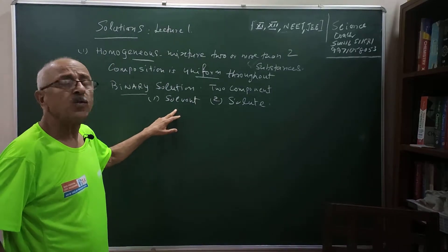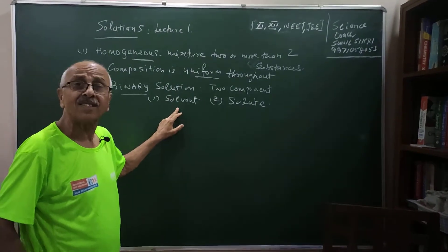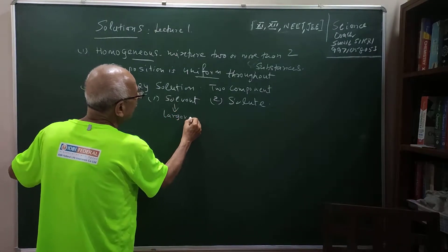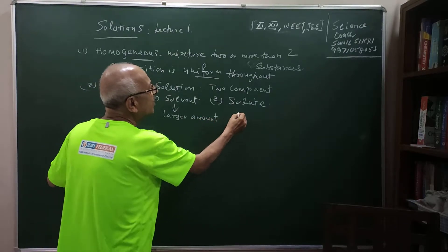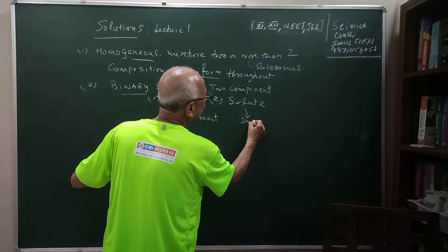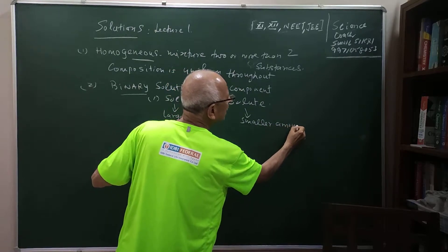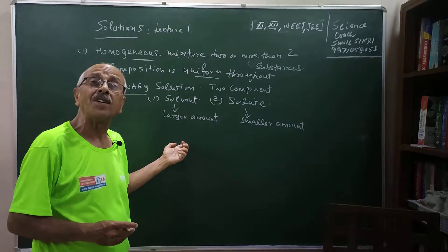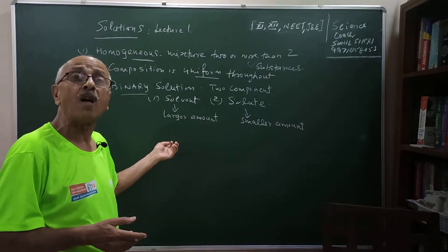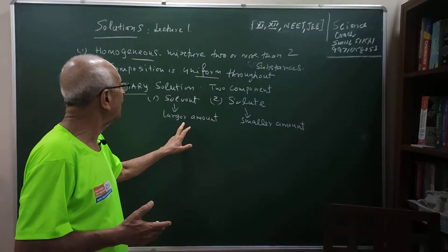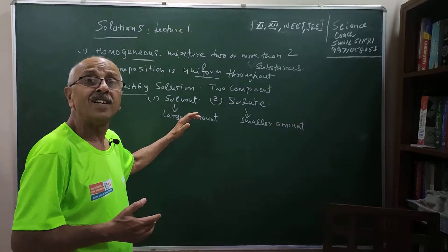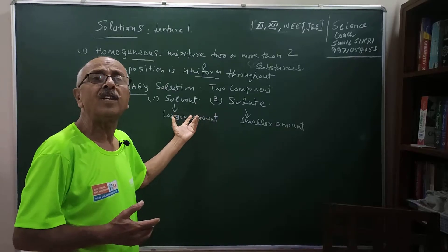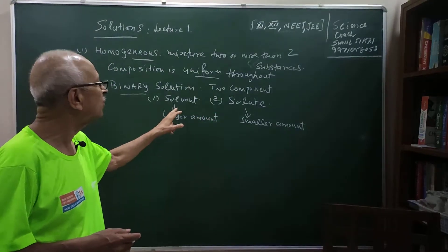The solvent is the component present in the larger amount, while the solute is the component present in the smaller amount. But sometimes the solvent can also become a solute depending on the quantity — whether defined in grams, milliliters, or moles. So solvent and solute are relative terms: whichever is larger is the solvent, whichever is smaller is the solute. If they are in equal amounts, either one may be considered the solvent.